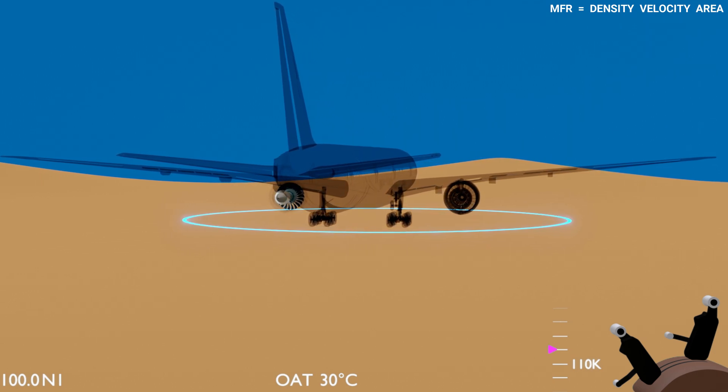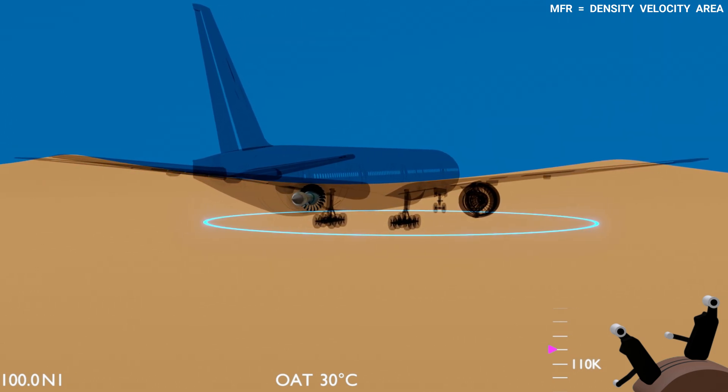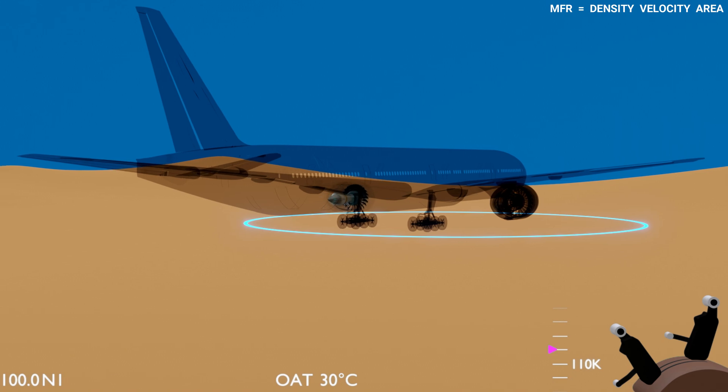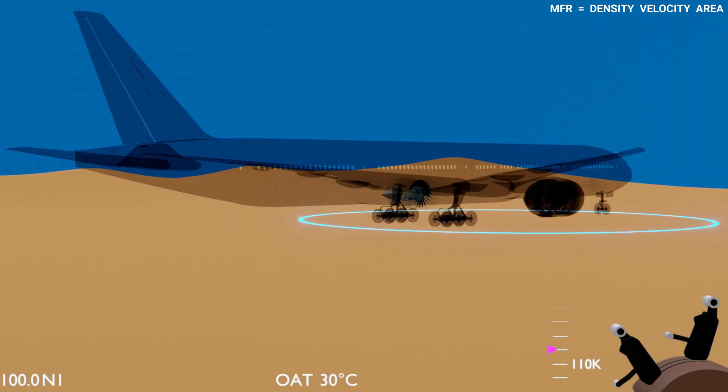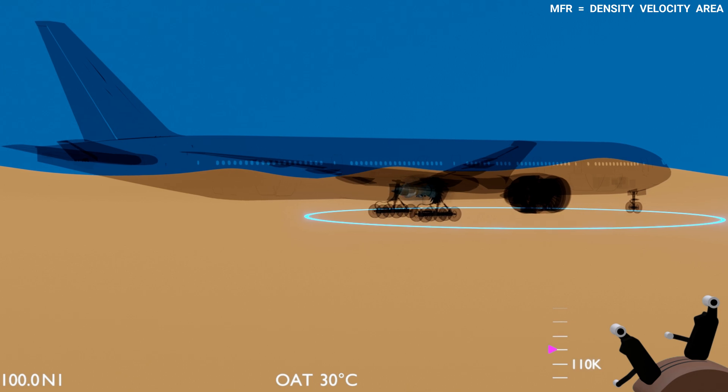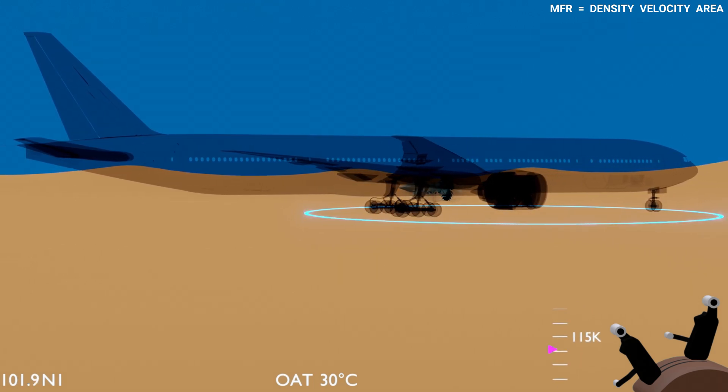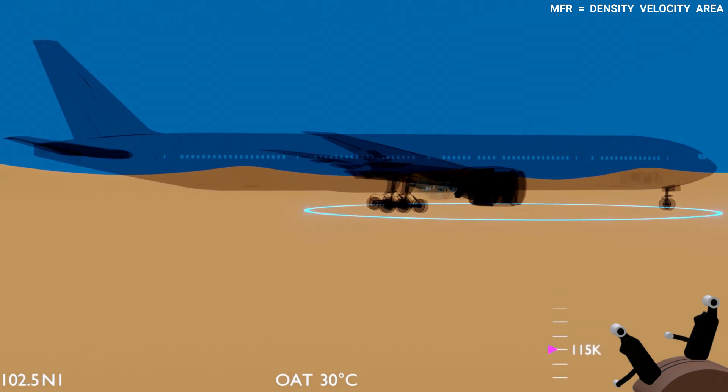In a high atmospheric temperature condition, the air density is relatively lower. If the engine runs at the standard speed, then it will fall short of the rated thrust. Therefore the EEC increases the N1 speed to increase the airflow and ensures the rated thrust is maintained.